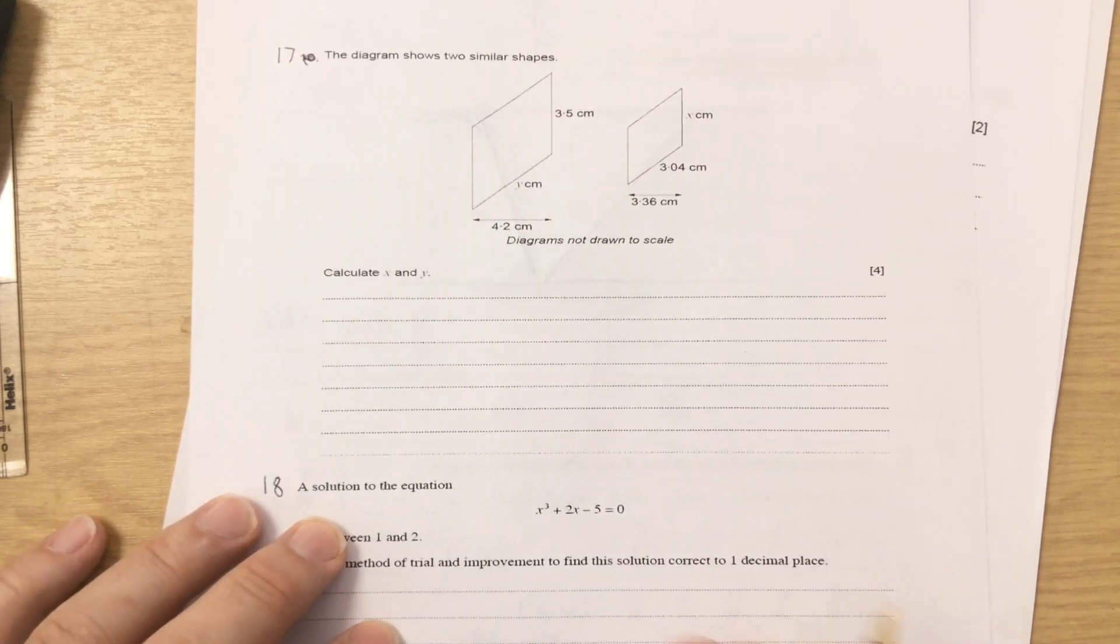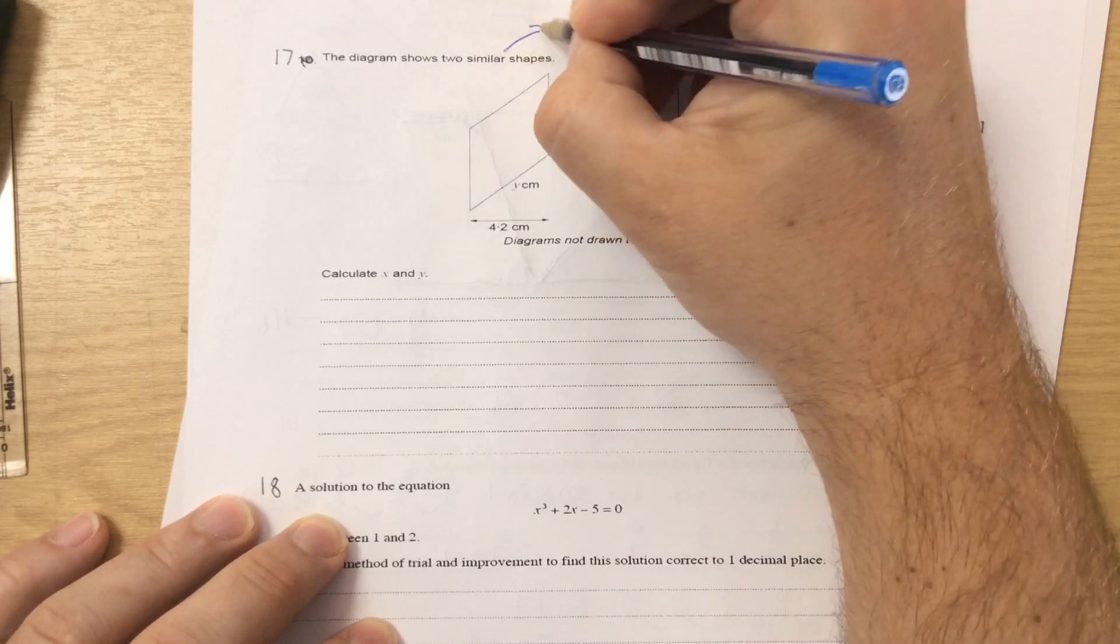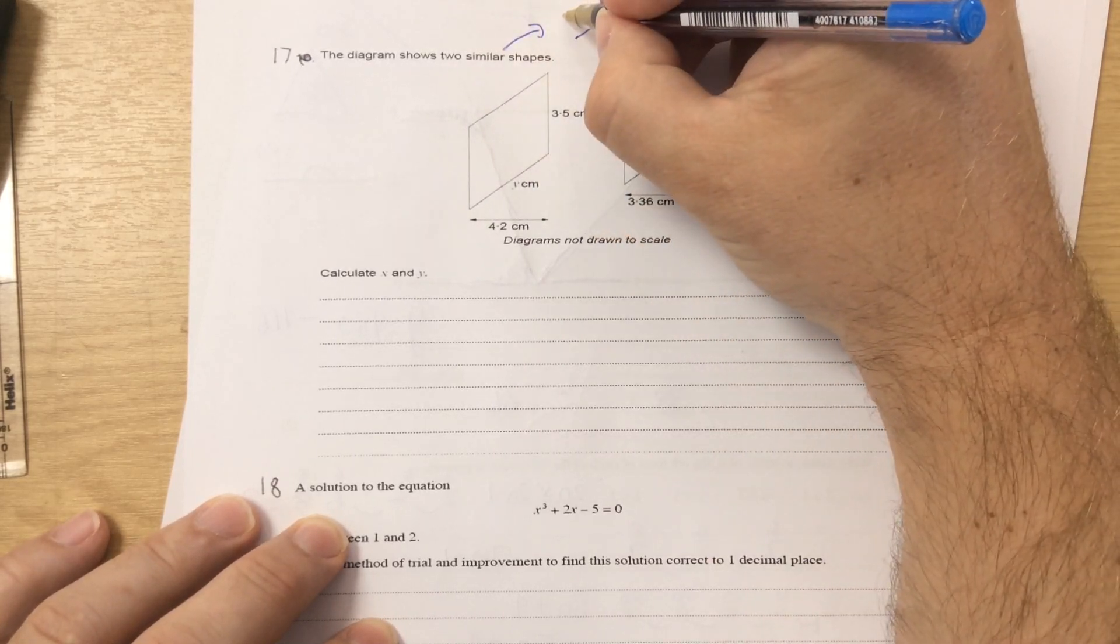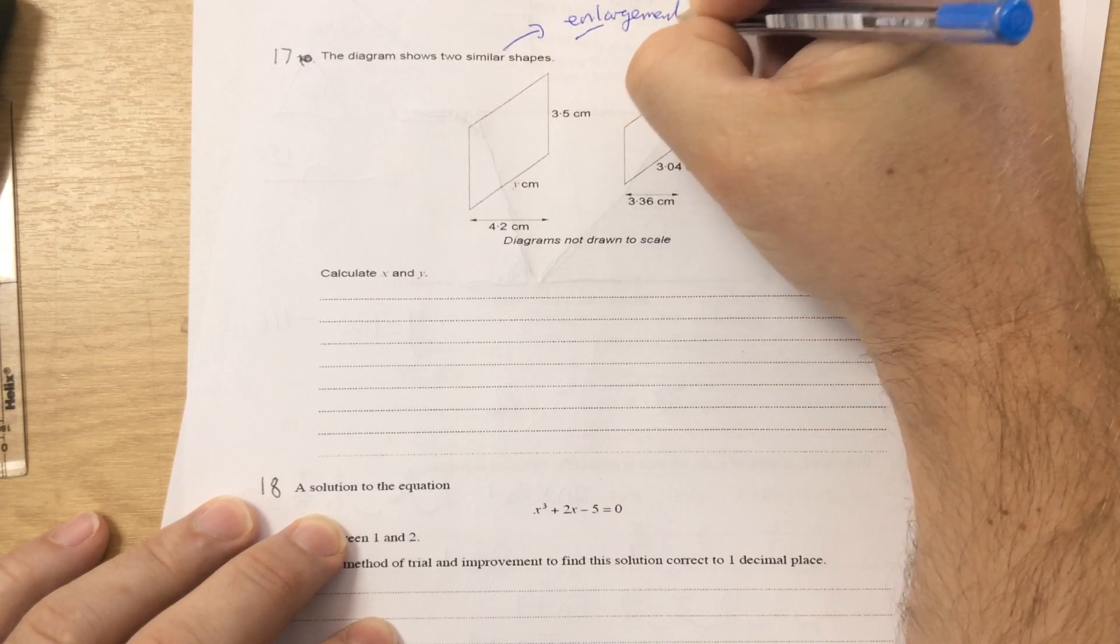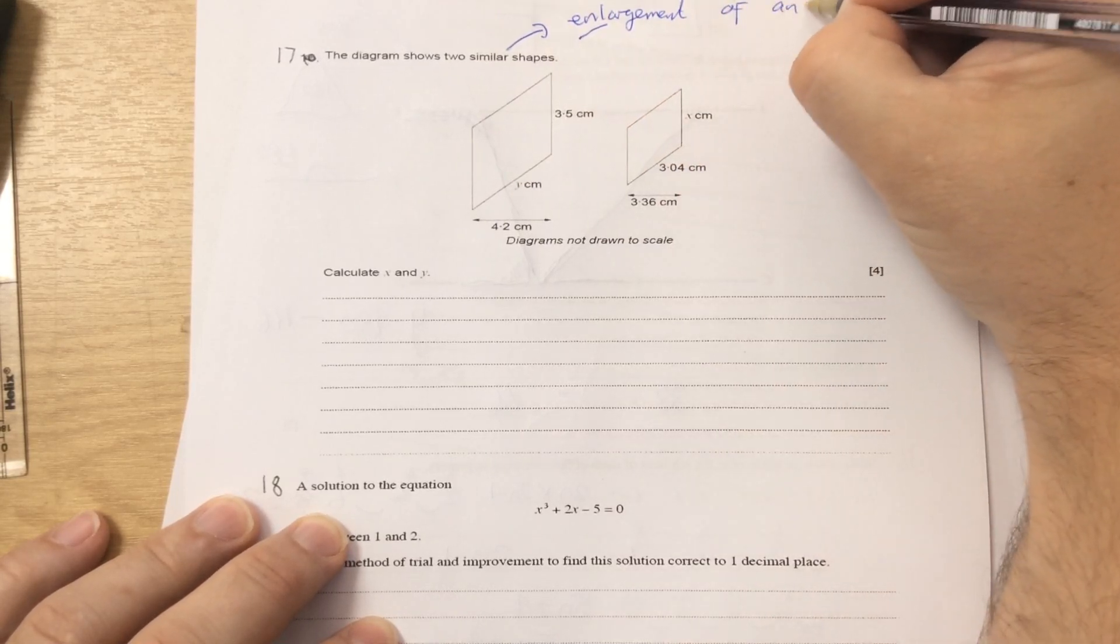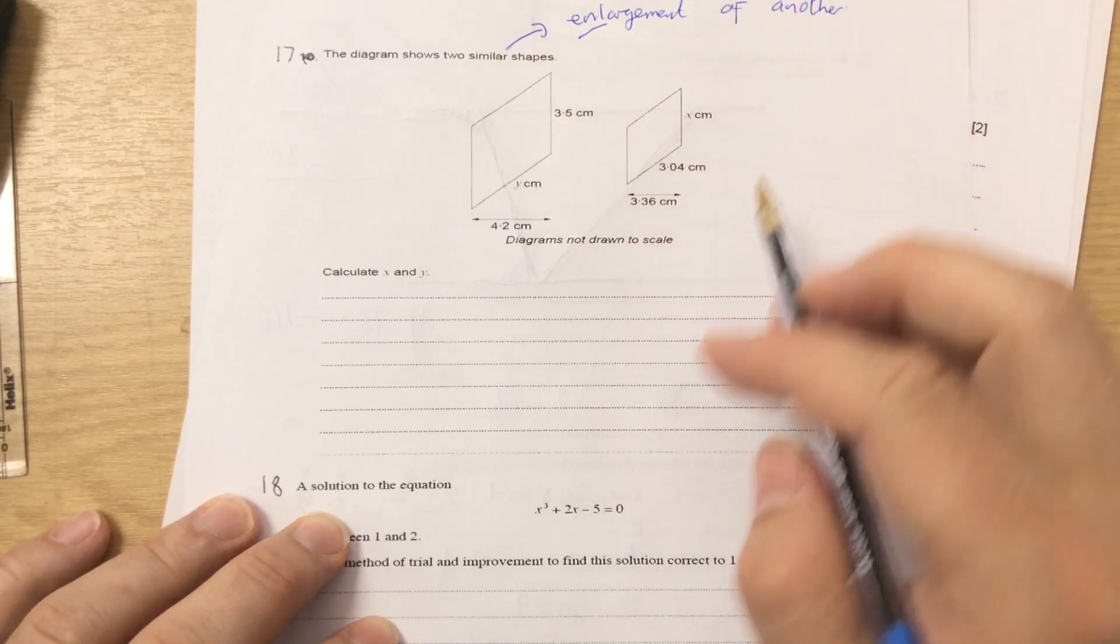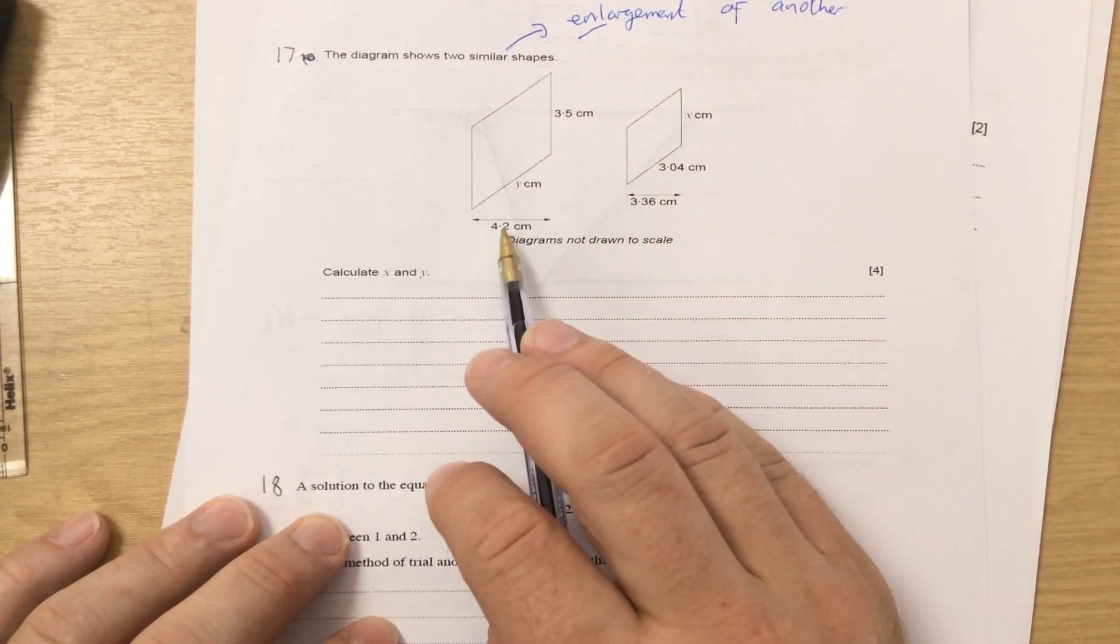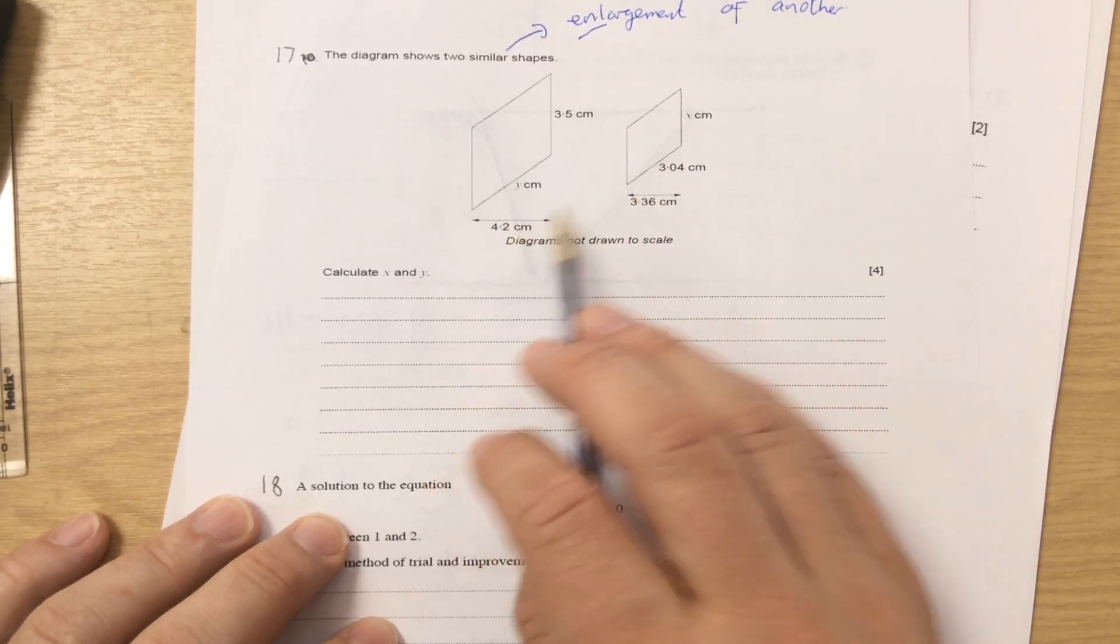Question 17. The diagram has got two similar shapes. Similar means that one shape is an enlargement of another. They can have the same angles, but there's a scale factor that works them out. You look what is similar about them. 4.2 and 3.36 are similar.